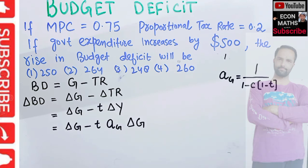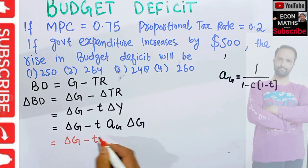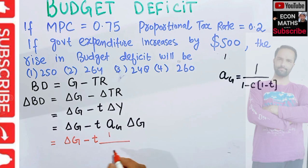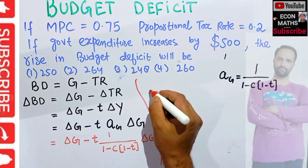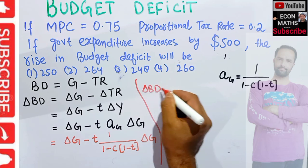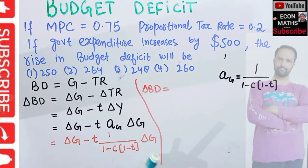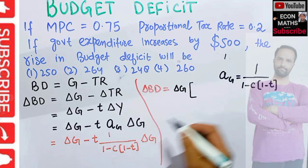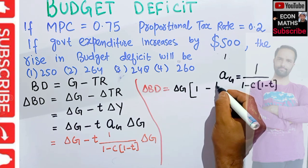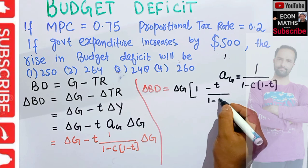Substituting the multiplier formula: ΔBD = ΔG minus t times [1/(1 - C(1 - t))] times ΔG. Taking ΔG common, change in budget deficit equals ΔG times [1 minus t/(1 - C(1 - t))].